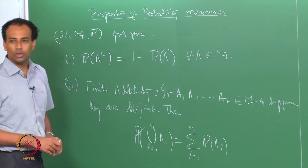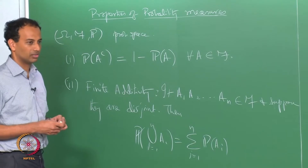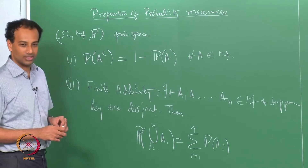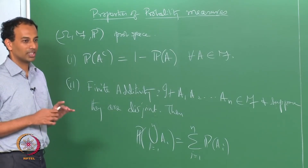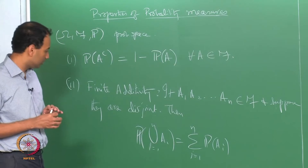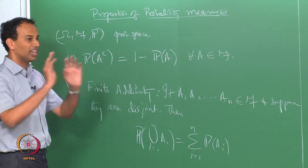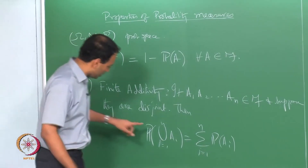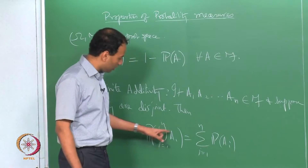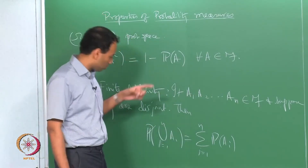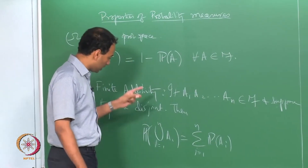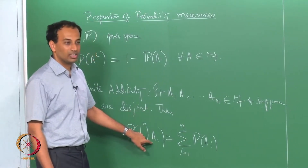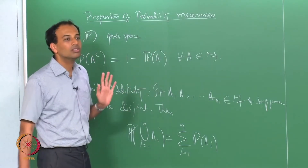How do you prove finite additivity? We know that probability measures are countably additive, but you have to prove they are finitely additive. After A_n, you choose all those events as null sets. Then the union from i equals 1 to infinity of A_i equals the union from i equals 1 to n of A_i, because A_{n+1}, A_{n+2}, and so on are all null sets.